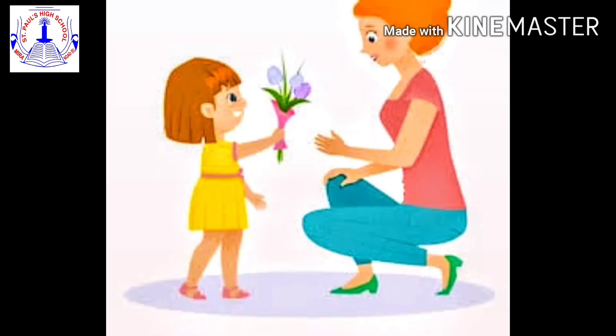Students, can you see this picture? Now, what can you see in this picture? Mother is giving flowers to her child. Can you tell me how many flowers are there with the girl? Let's count: one, two, three. There are three flowers with the girl.